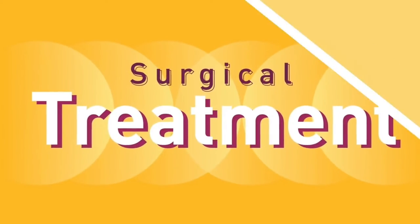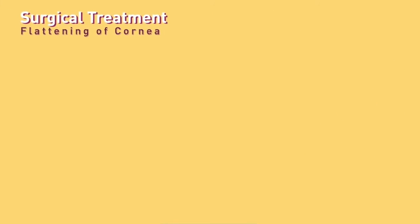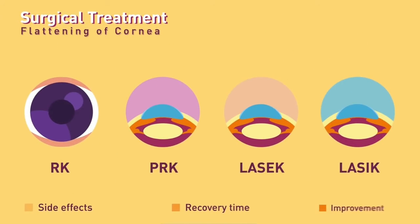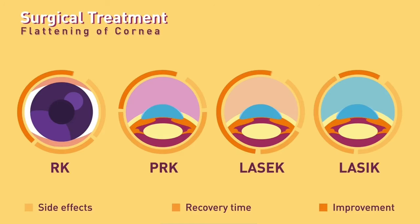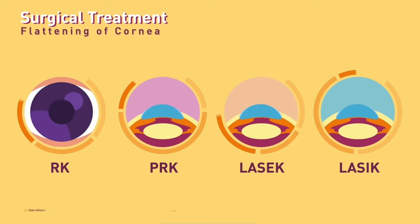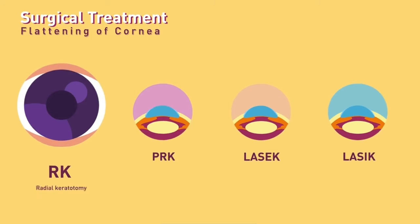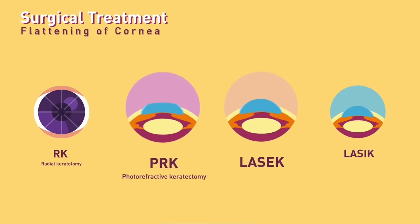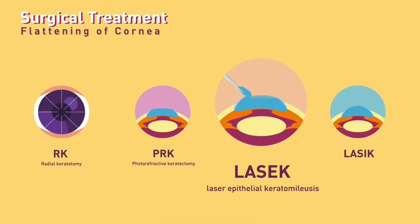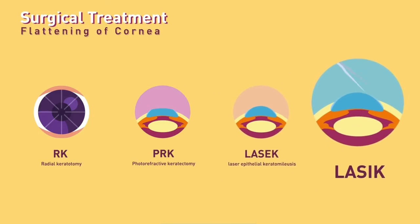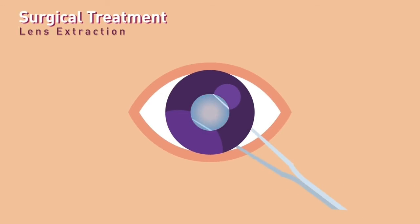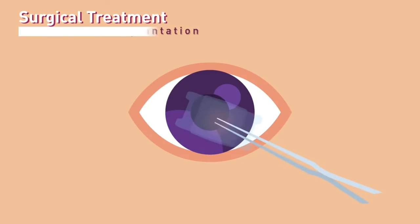Surgical treatment. Flattening the central part of the cornea includes different methods that were changed and advanced depending upon reduction of side effects, recovery time, and improvement of degree of vision. The surgeries included in this category are: Radial Keratotomy, Photorefractive Keratectomy, LASEK (Laser Epithelial Keratomileusis), and LASIK (Laser In-Situ Keratomileusis). Other surgical treatment options are Lens Extraction and Contact Lens Implantation.